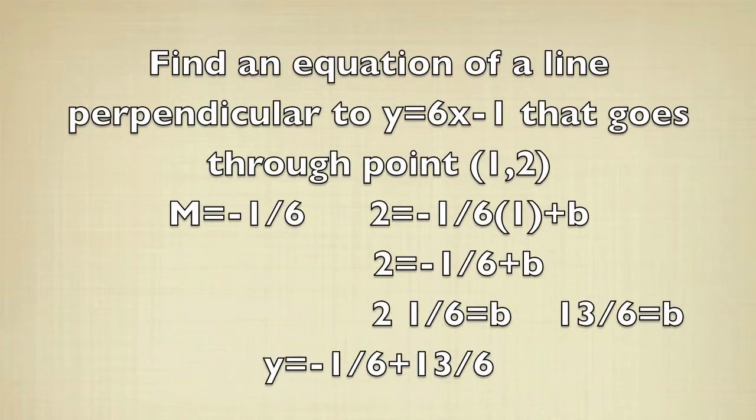So what about perpendicular lines? Let's find an equation of a line perpendicular to y equals 6x minus 1 that goes through point (1, 2). First, because it's a perpendicular line, we need to make the m its negative reciprocal. So the m would be negative 1 sixth. Then, just like for parallel lines, you plug in the points into the equation. So it will be 2 equals negative 1 sixth times 1 plus b. Since b is what we're trying to find, it is the unknown. You multiply negative 1 sixth by 1 and get 2 equals negative 1 sixth plus b. Then you add 1 sixth to both sides and get 2 and 1 sixth equals b. Simplify that fraction and you get 13 sixth equals b. So the perpendicular equation would be y equals negative 1 sixth x plus 13 sixth.